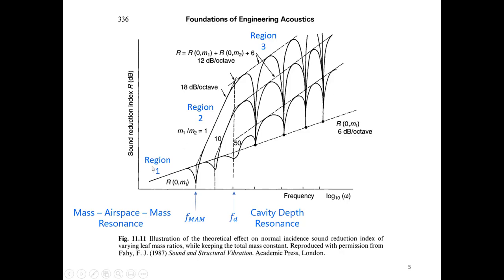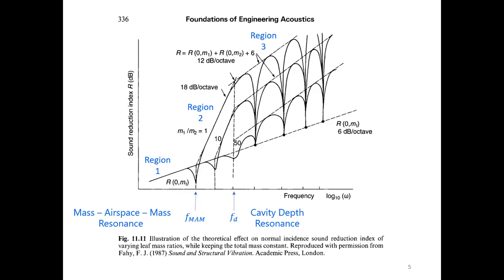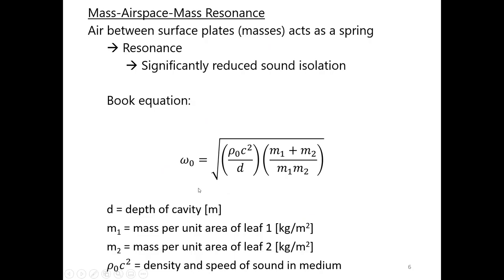Region one is the low frequencies — everything below the mass-air-space-mass resonance. Region two is where the two different sides are working almost like two individual leaves, and that goes up to the cavity depth resonance. Above that is region three. We're going to talk about all of those in more detail.